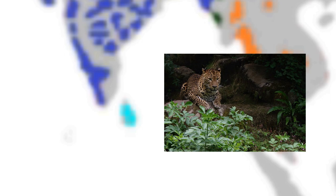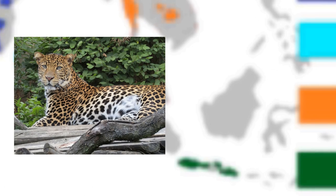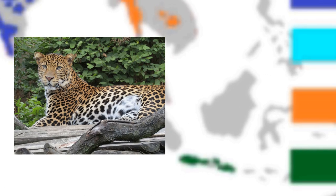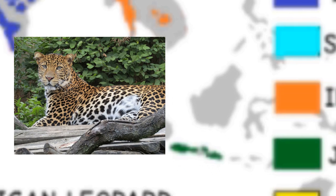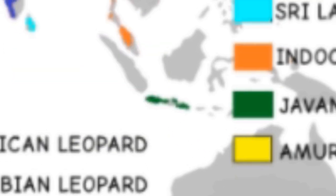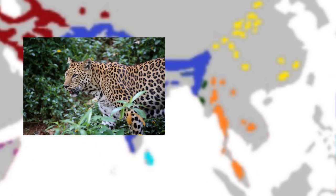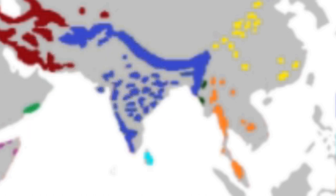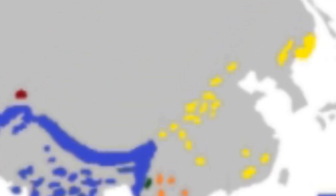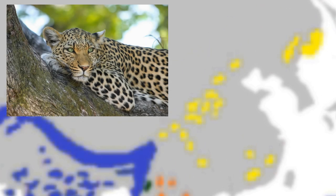The Sri Lankan leopard is native to mainland Sri Lanka. The Javan leopard is native to Java in Indonesia and is considered critically endangered. The Indochinese leopard is native to mainland Southeast Asia and South China. The Amur leopard is native to the Russian Far East and Northern China, but is locally extinct in the Korean Peninsula.